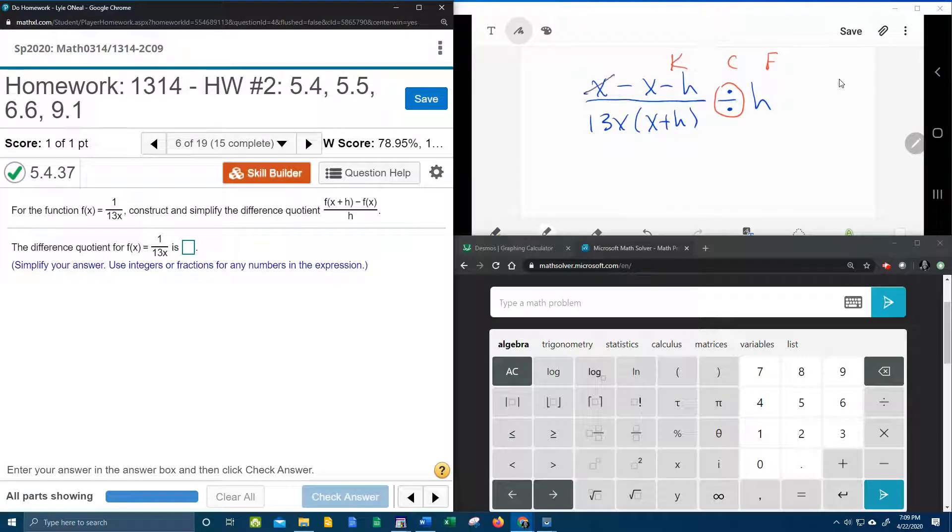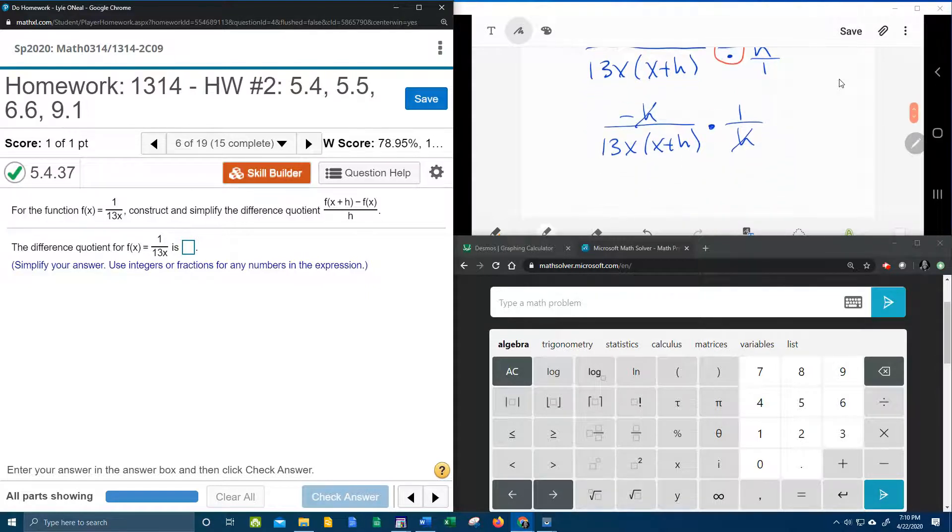Notice that x minus x, the x's cancel, leaves me negative h over 13x times x plus h. Change to multiplication. h is understood to be h over 1. If I flip it, that's 1 over h.